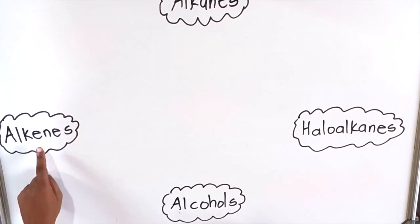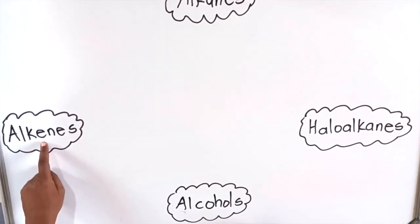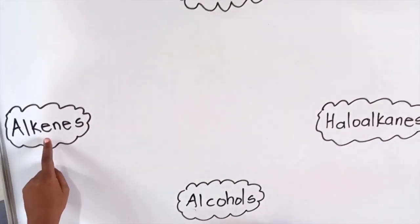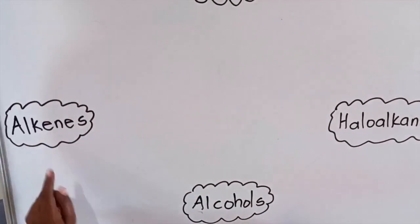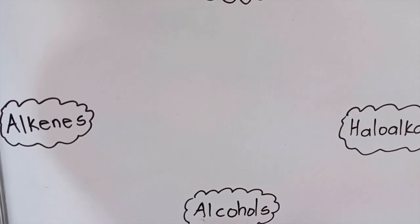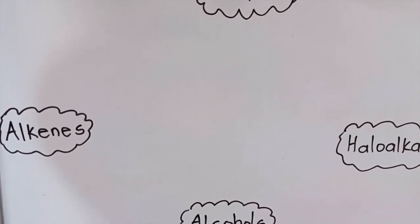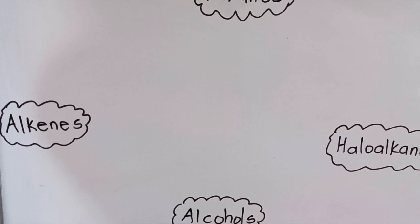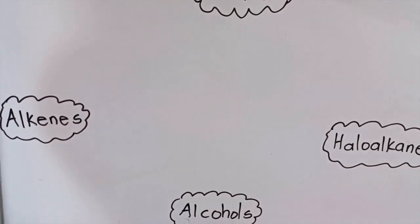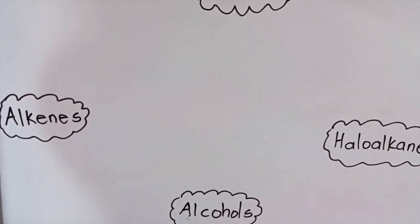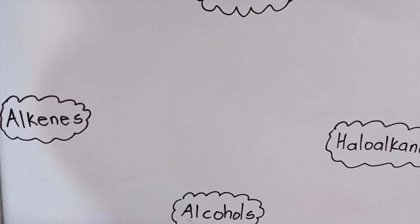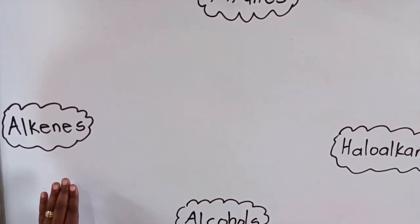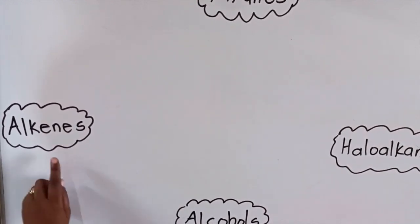We're going to start with alkenes. Alkenes are unsaturated, meaning that they have a double bond. These reactions are the only ones that undergo addition. In addition, the double bond becomes two single bonds and something is added onto the alkene. There are four different kinds of additions that can happen with alkenes.